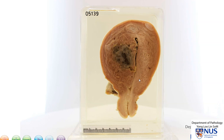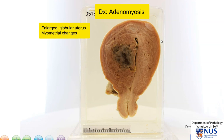These are sometimes known as punctate hemorrhages. The diagnosis here is adenomyosis. Adenomyosis usually gives rise to an enlarged, rather globular-shaped uterus with a trabeculated myometrium, and sometimes you can see punctate hemorrhages.